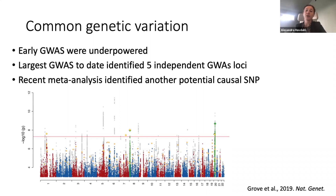Early GWASs of autism were underpowered, partly due to overestimating potential effect sizes. Grove and colleagues conducted a large GWAS of autism combining data from over 18,000 autistic individuals and 27,000 non-autistic controls, and they identified five independent GWAS loci. Another recent study identified a further novel locus by meta-analyzing results from Grove et al. with the SPARC cohort.